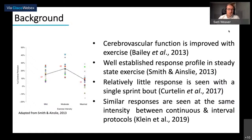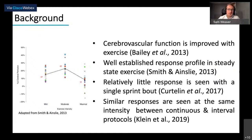During an acute bout, the cerebral blood flow response is generally agreed to align with what we'd expect from chronic adaptation. In a steady-state situation there's a well-established response profile: elevations in perfusion up to a moderate intensity and then declining thereafter toward maximal intensity, returning close to resting values. Less well understood is how interval-based protocols may change this response. Within the periphery, exercise at higher intensities can drive similar adaptations to moderate intensity exercise, whereas relatively little has been done within the cerebral vasculature.